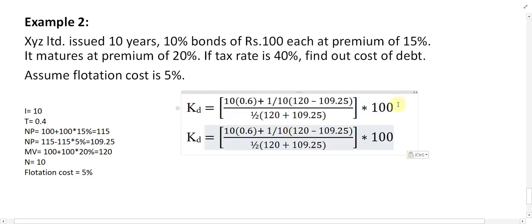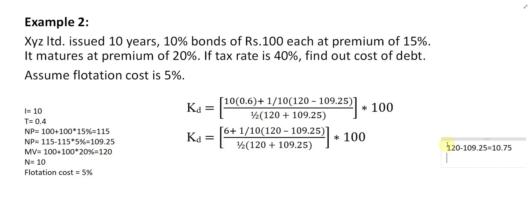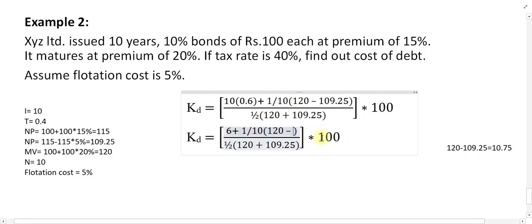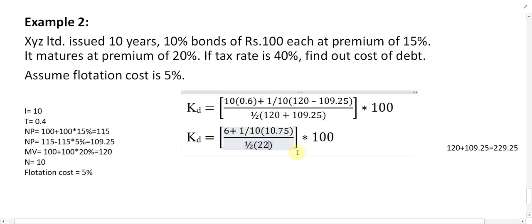Calculating the numerator: 10 multiplied by 0.6 gives 6. Then 120 minus 109.25 equals 10.75. That is the value of the (MV minus NP)/N part. Summing 6 plus 10.75 gives the numerator equal to 16.75. Wait — with the full sum, the numerator comes to 229.25 before division.